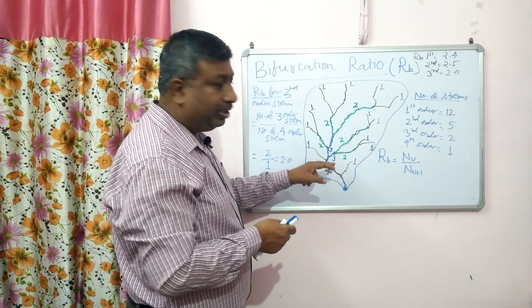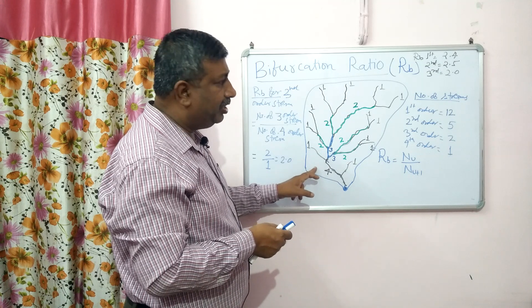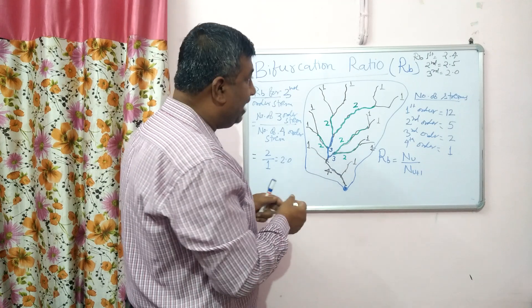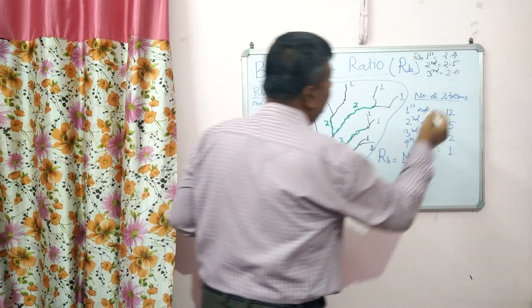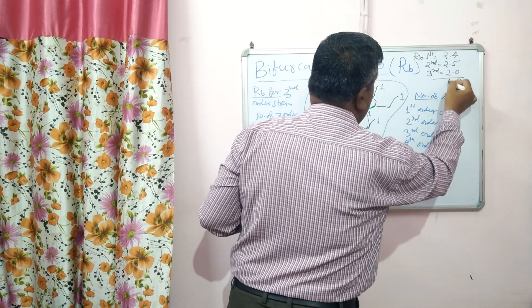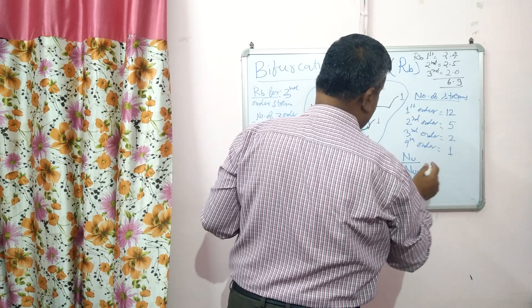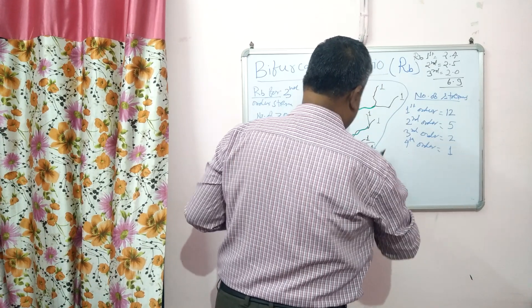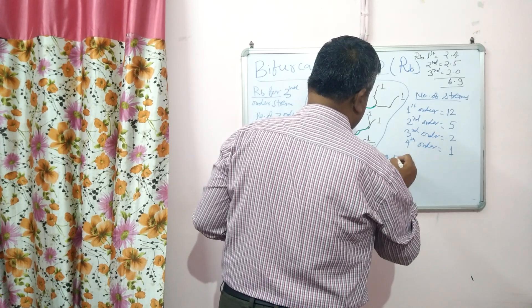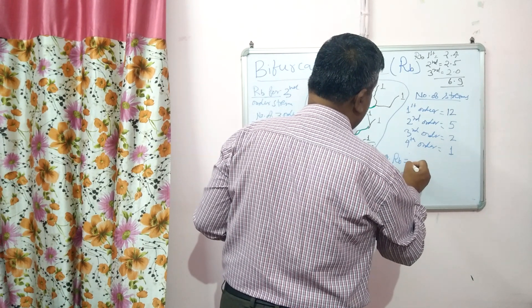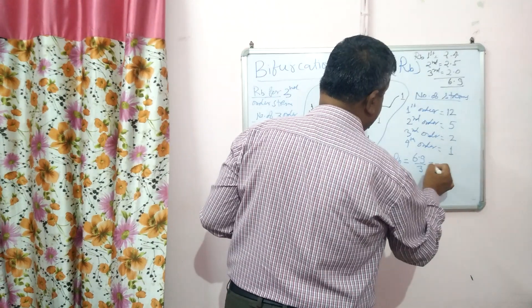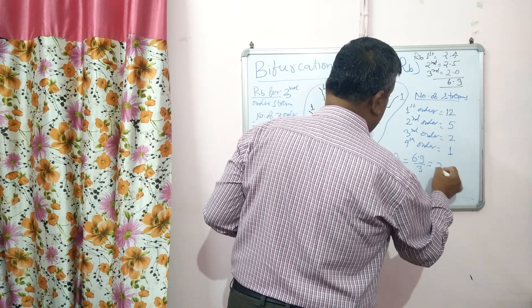The sum of bifurcation ratios is 6.9, so the average Rb is 6.9 divided by 3, which equals 2.3.